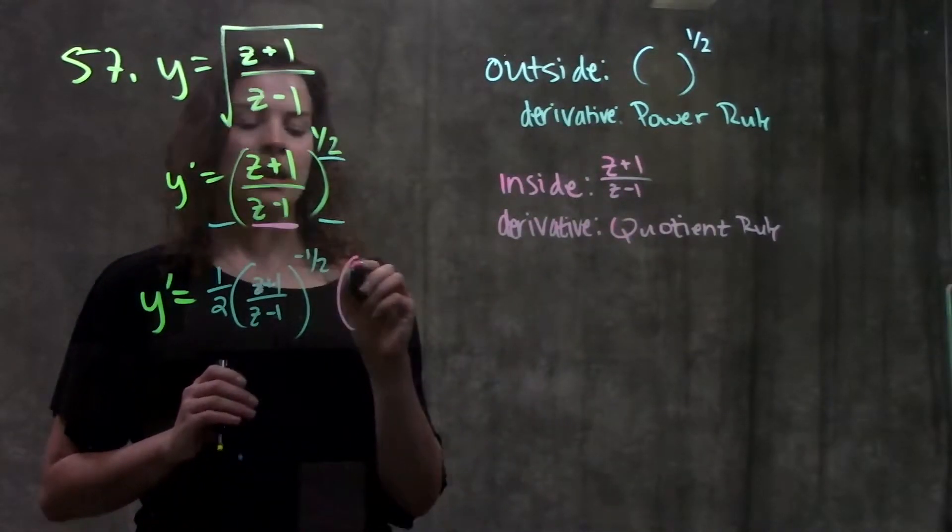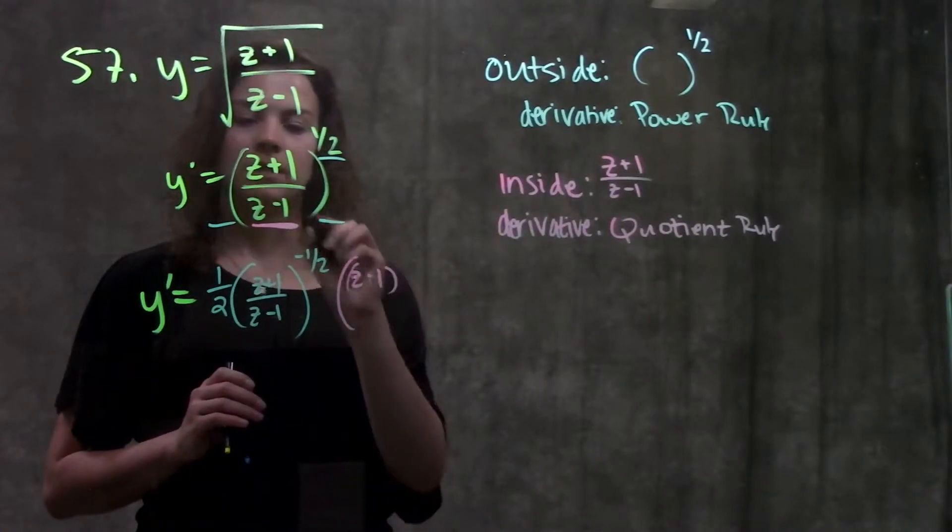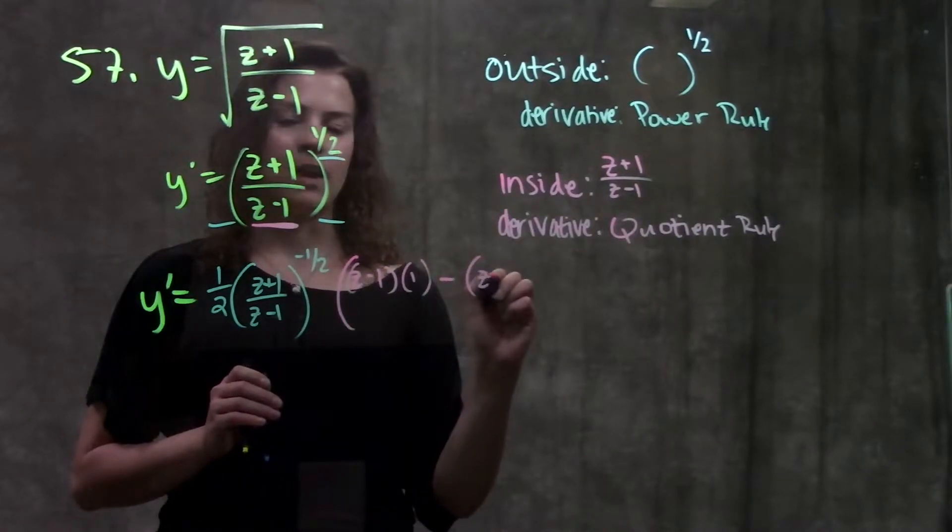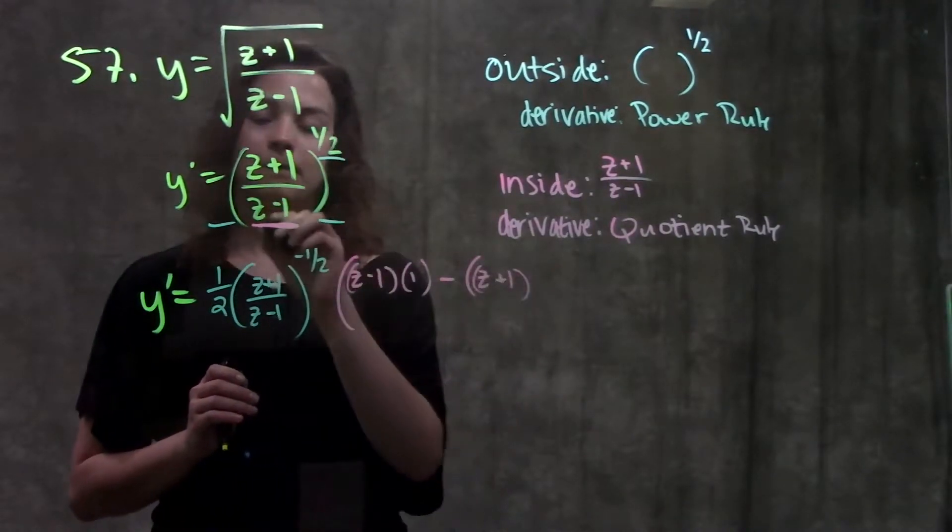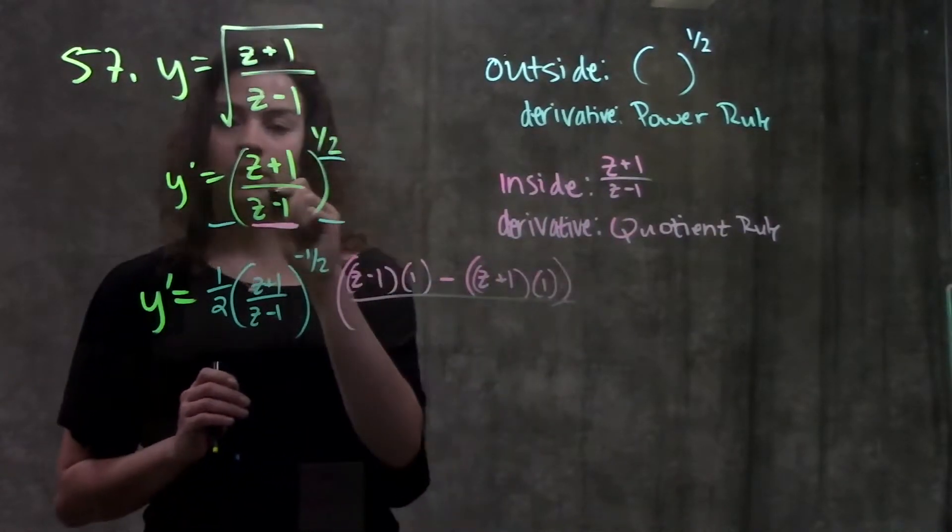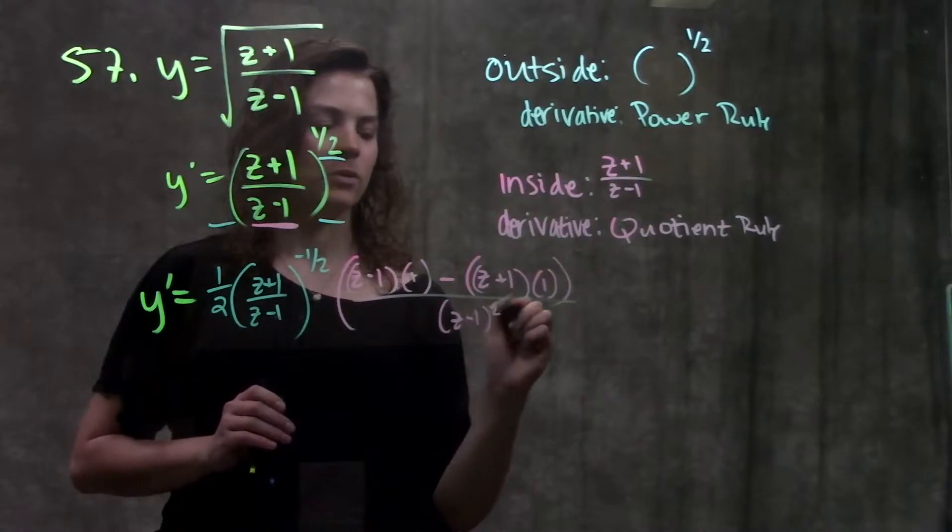So this becomes my low times the derivative of the high, which will end up just being one, minus the entire quantity of my high times the derivative of the low, which also ends up being one, all over the low squared, z minus one squared.